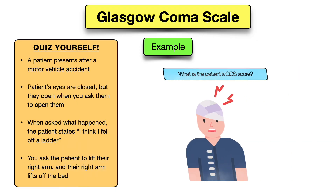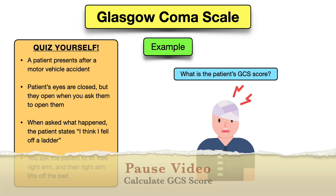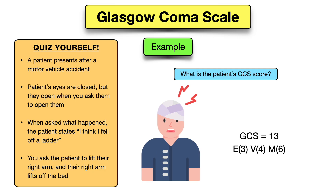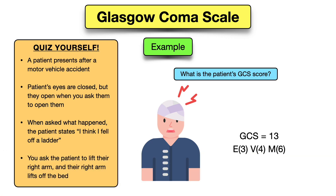Now let's do a practice question. A patient presents after a motor vehicle accident. Their eyes are closed but open when you ask them to open them. When you ask what happened, the patient states 'I think I fell off a ladder.' You ask the patient to raise their right arm and the right arm lifts off the bed. The GCS score is 13: eye response of three (eyes open to sound), verbal response of four (confused — they answered but gave the wrong event), and motor response of six (followed your command).